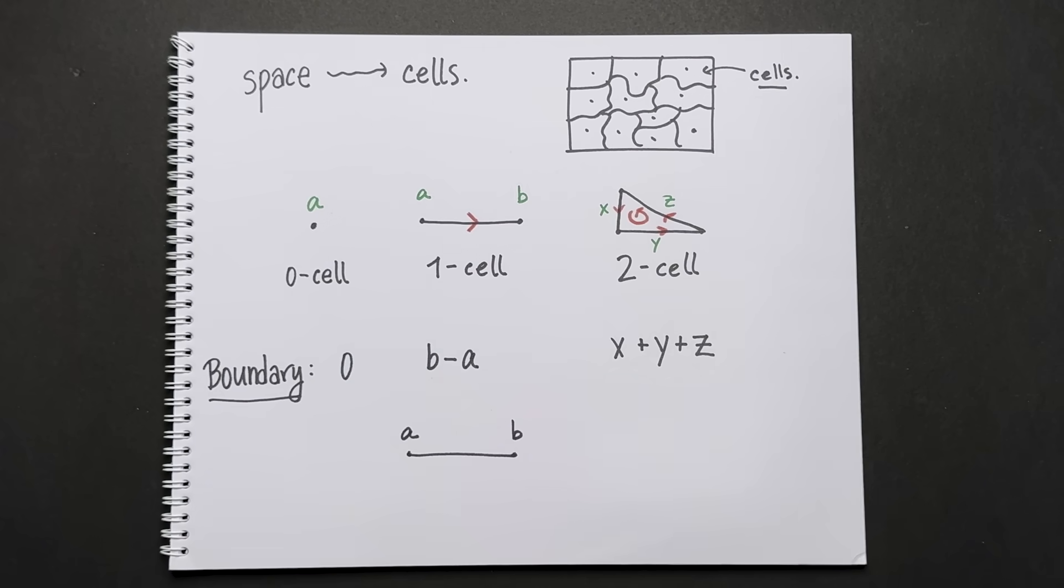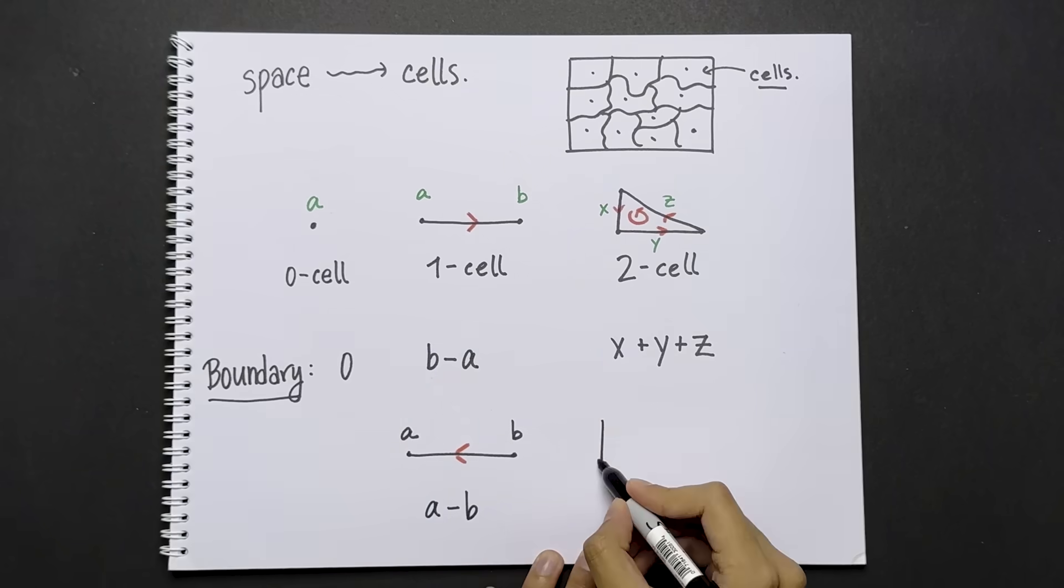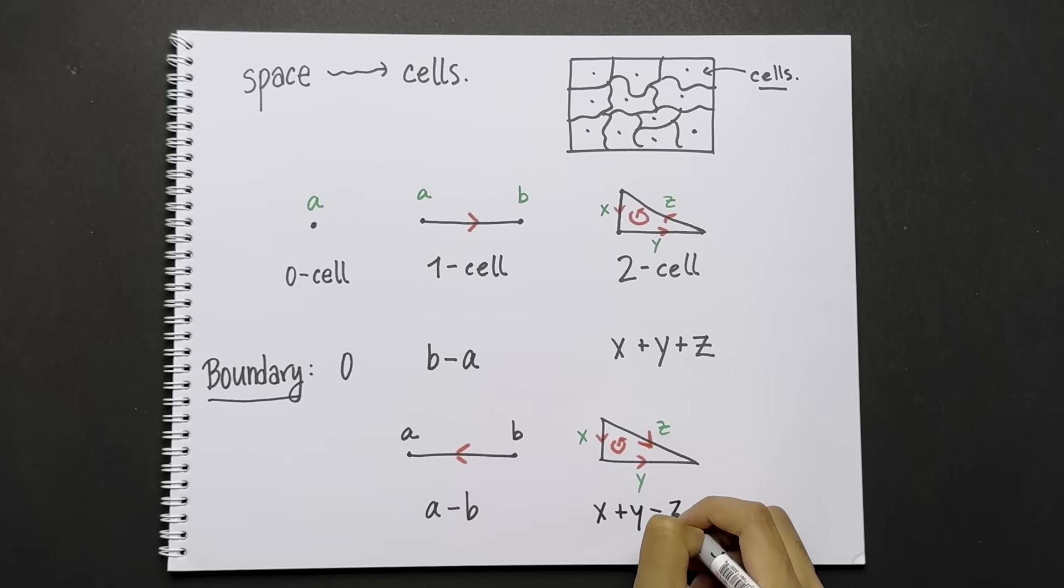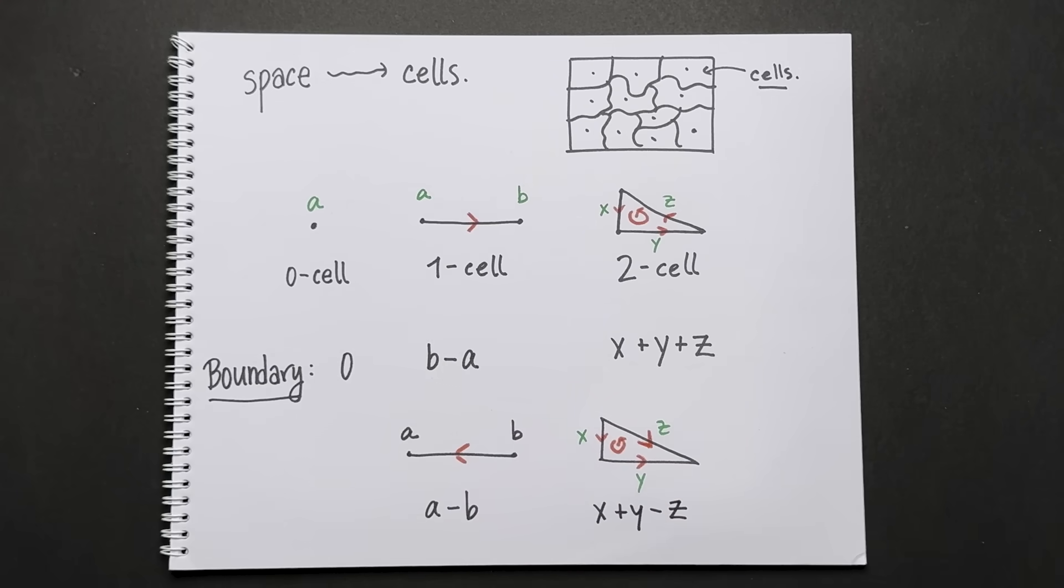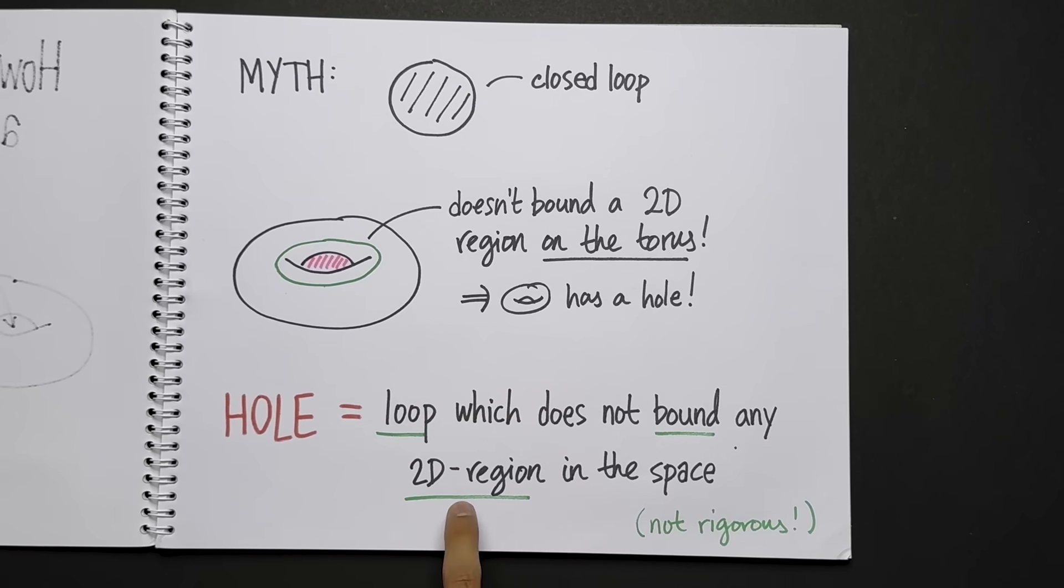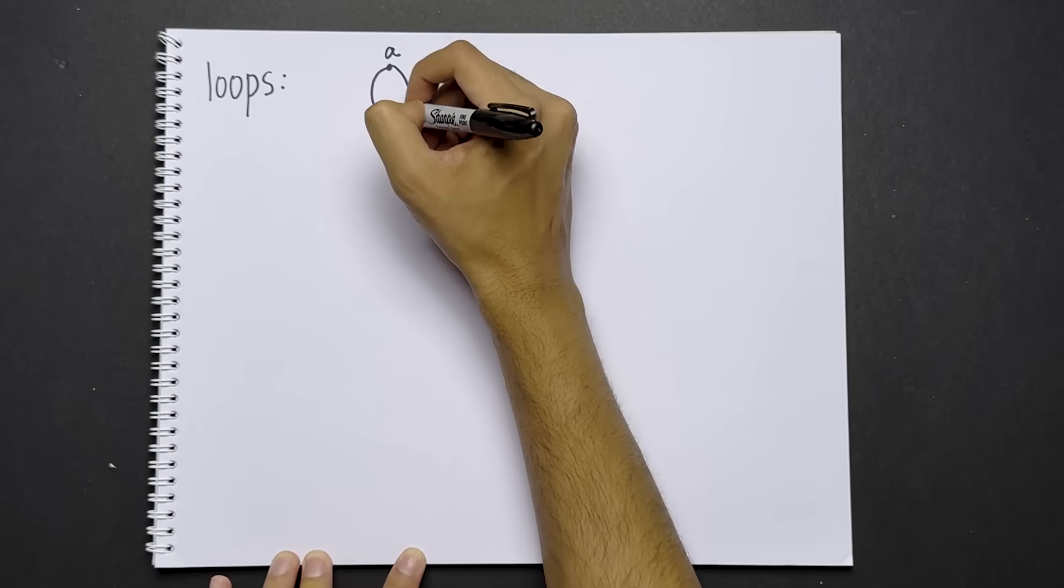Now what if we flip the orientation of the one cell? The boundary is now a minus b. What if we flip the orientation of the side z in the two cell? The boundary is now x plus y minus z. How does this relate to holes? Recall that a hole is measured by a loop which does not bound any 2D region in the space. We can now rephrase this in terms of cells.